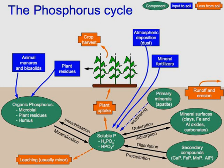Runoff may carry a small part of the phosphorus back to the ocean. Generally with time, thousands of years, soils become deficient in phosphorus, leading to ecosystem retrogression.